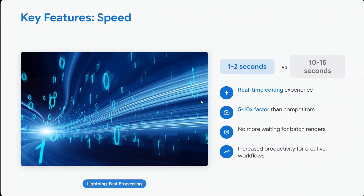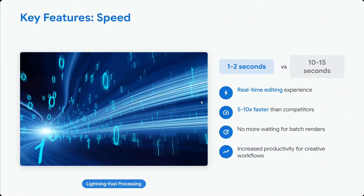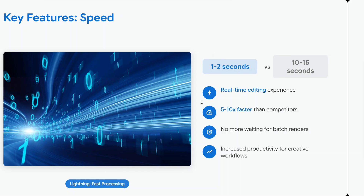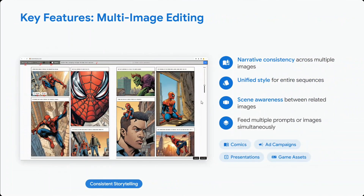Speed is a killer feature — it can generate images in under one second at times, which is five to ten times faster than any other model. No more waiting for batch rendering, and it increases productivity for sure. Multi-image editing is also present, with narrative consistency, unified style, and scene awareness between related images — making it a great help when generating comics, for example.